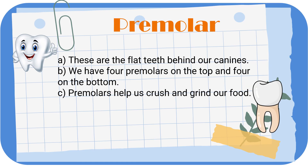The third one in the list is premolars. These are the flat teeth behind our canines. We have four premolars on the top and four at the bottom, so in totality we have eight premolars. They help us crush and grind our food. Premolars are between the canines and molars.